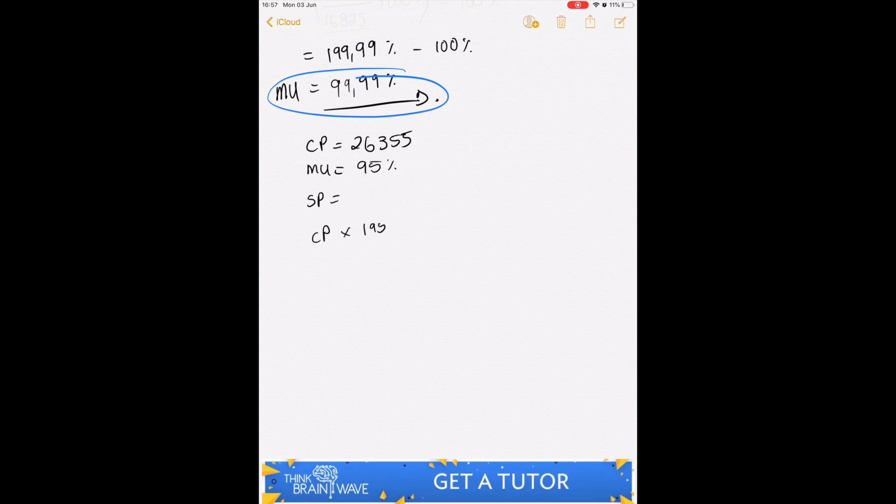And we would like to calculate our selling price. So what we do is we say cost price times by what we want over what we have.